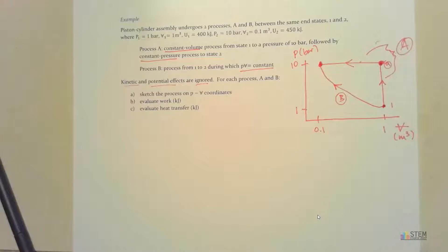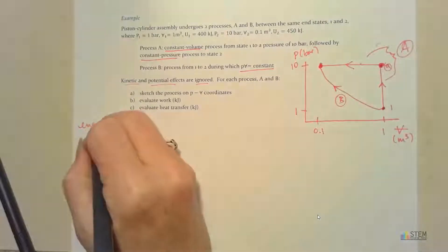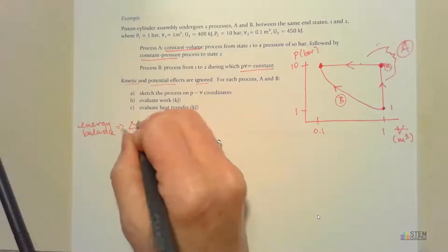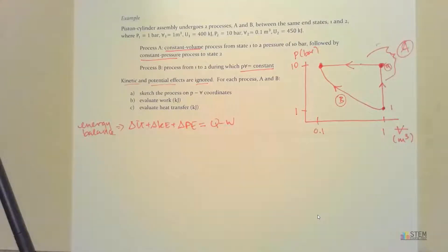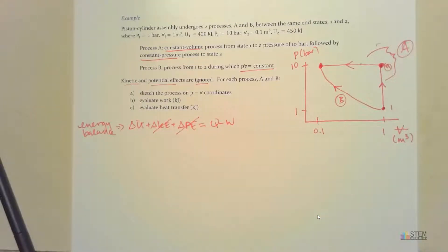Now let's evaluate work and heat transfer for both processes. Whenever a problem asks for both, that signals we need the energy balance equation: delta U plus delta KE plus delta PE equals Q minus W. Since we're ignoring kinetic and potential energy effects, those terms cancel, leaving us with delta U equals Q minus W.